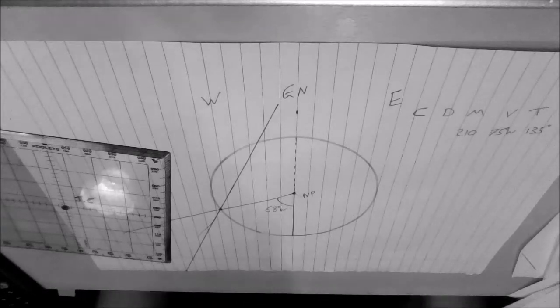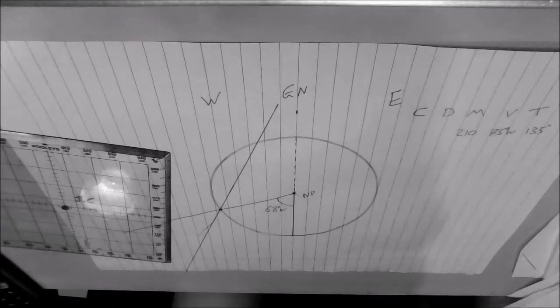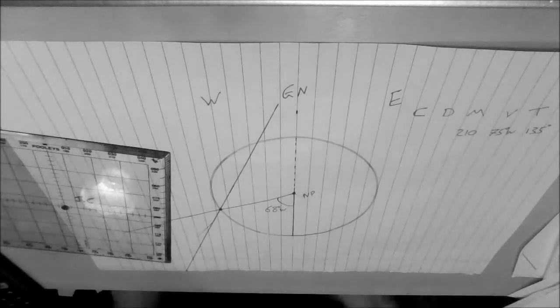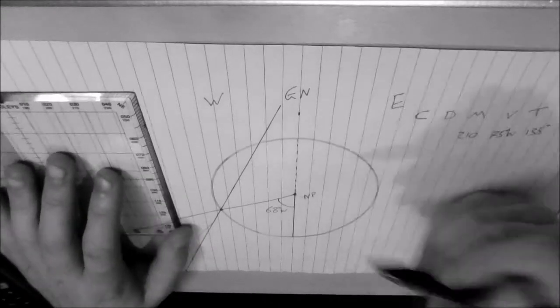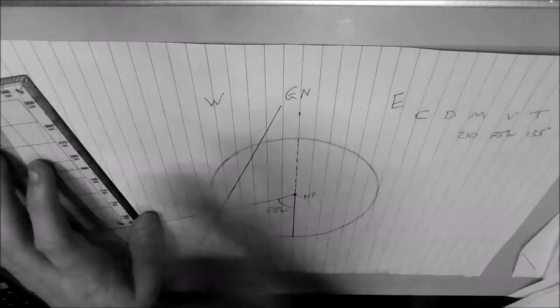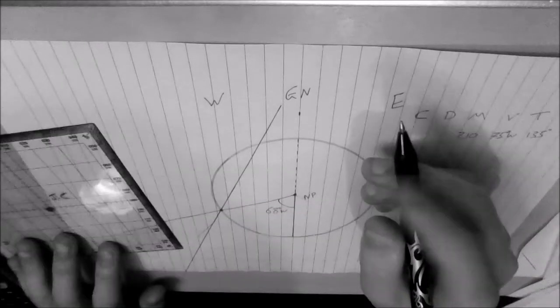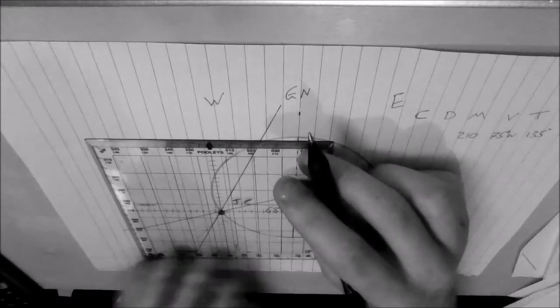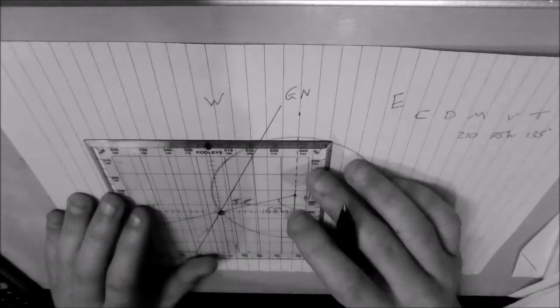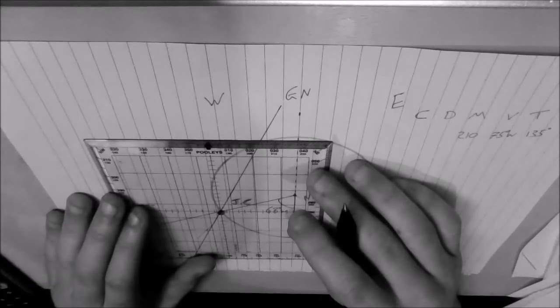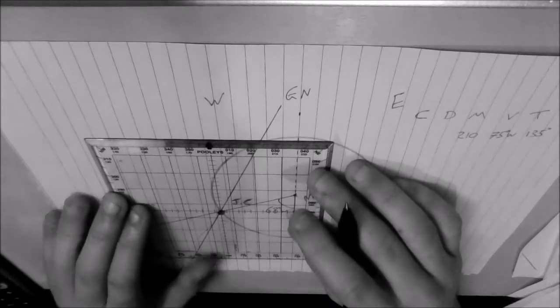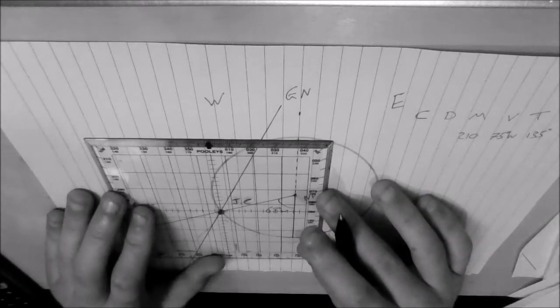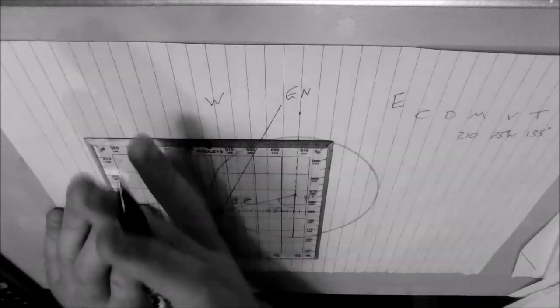Now what the question is asking us is which grid track must be maintained to track the 210 magnetic. So we know that grid north is this way and this is why using lined paper comes in quite handy because all of these straight lines now represent grid north. So what you need to do is put the center dot over the point at which the line and the circle intercept and align your compass with grid north.